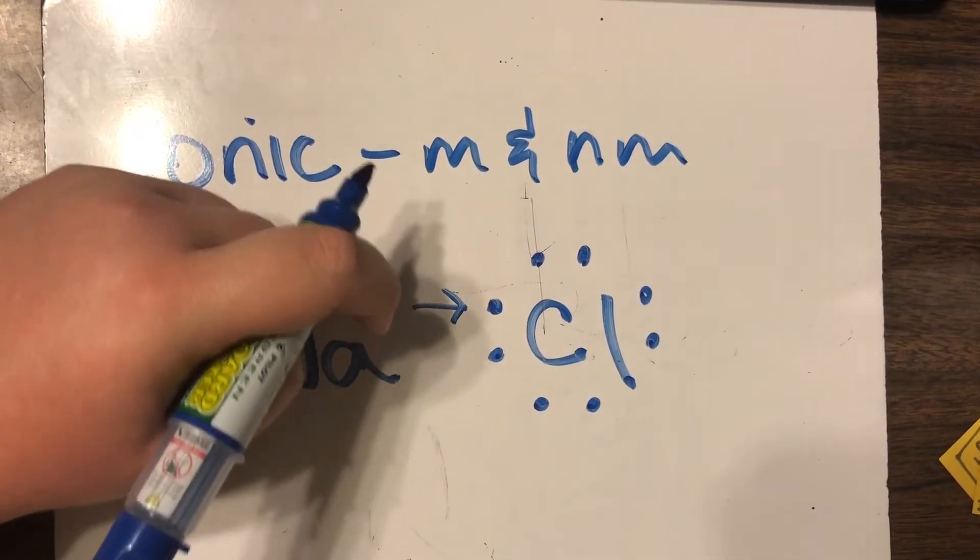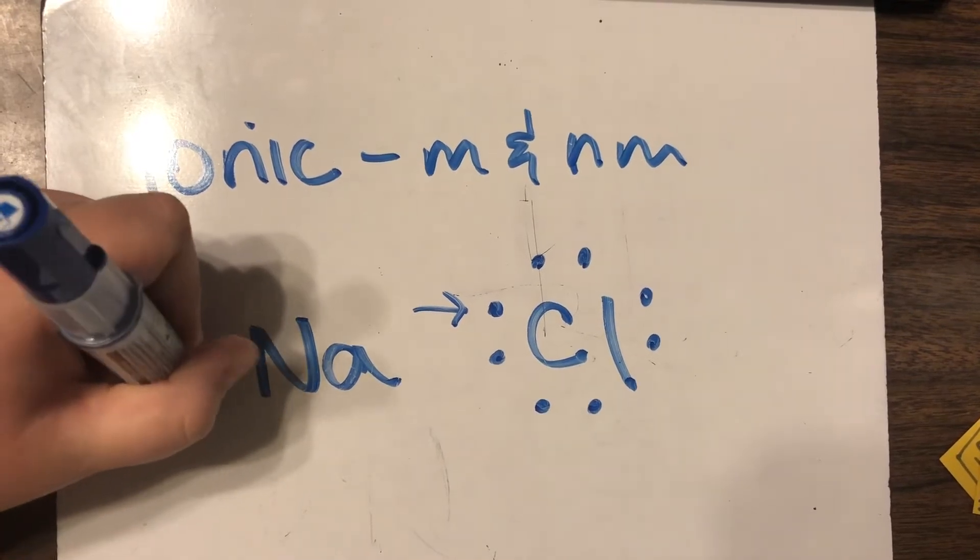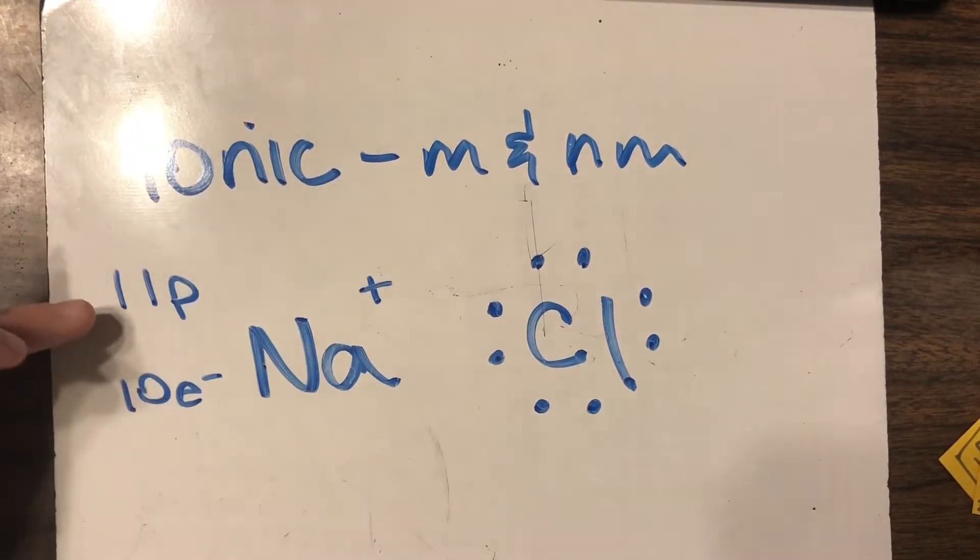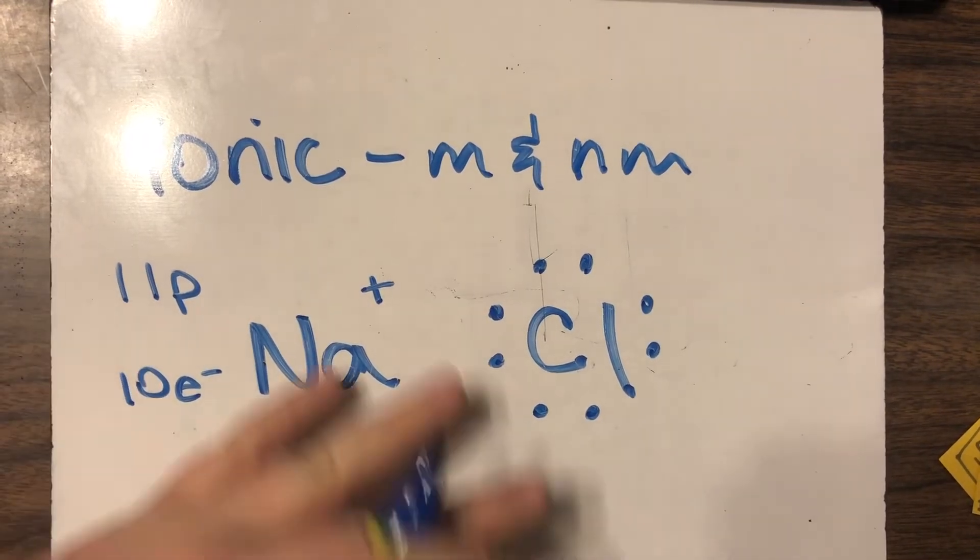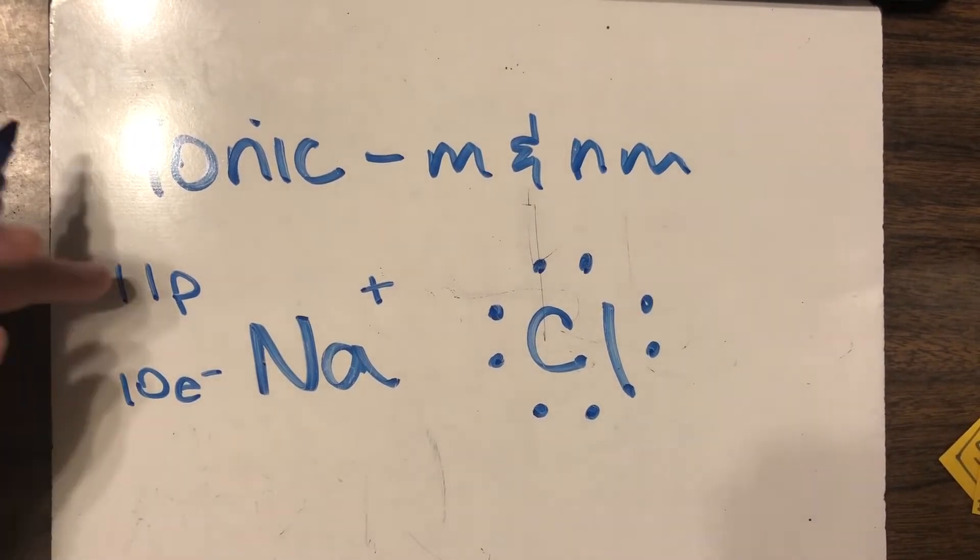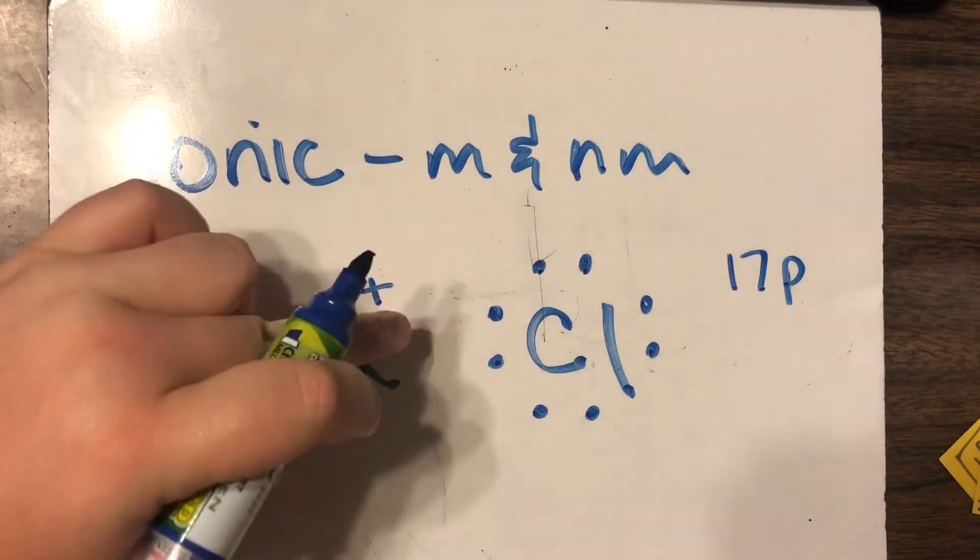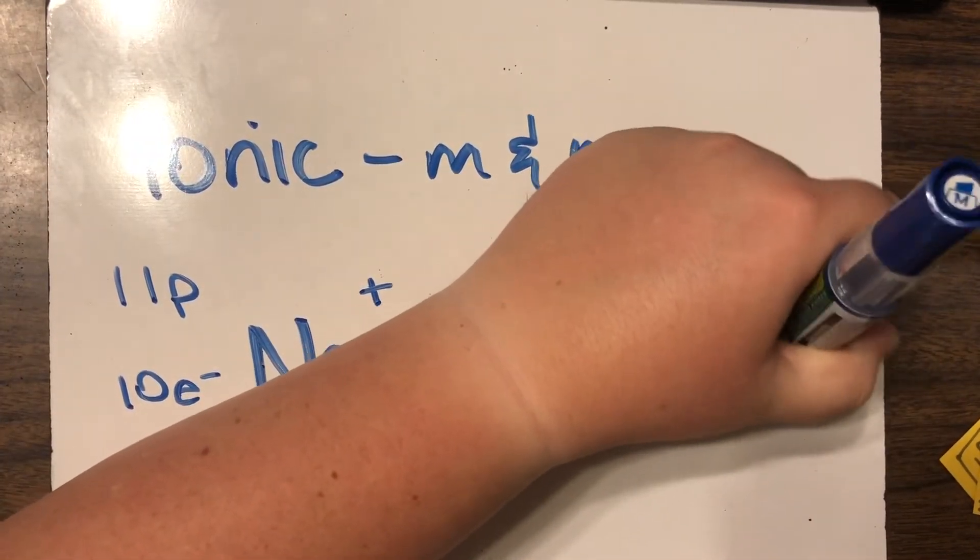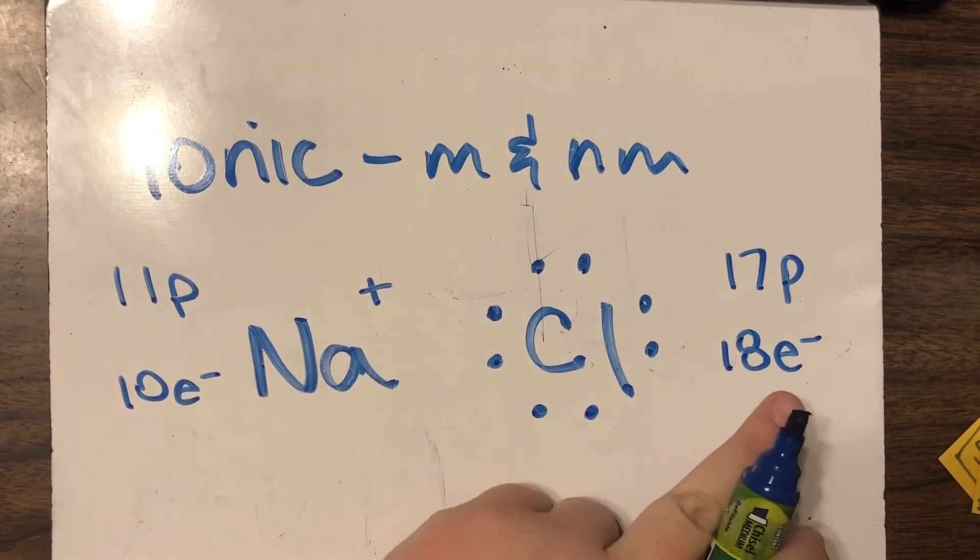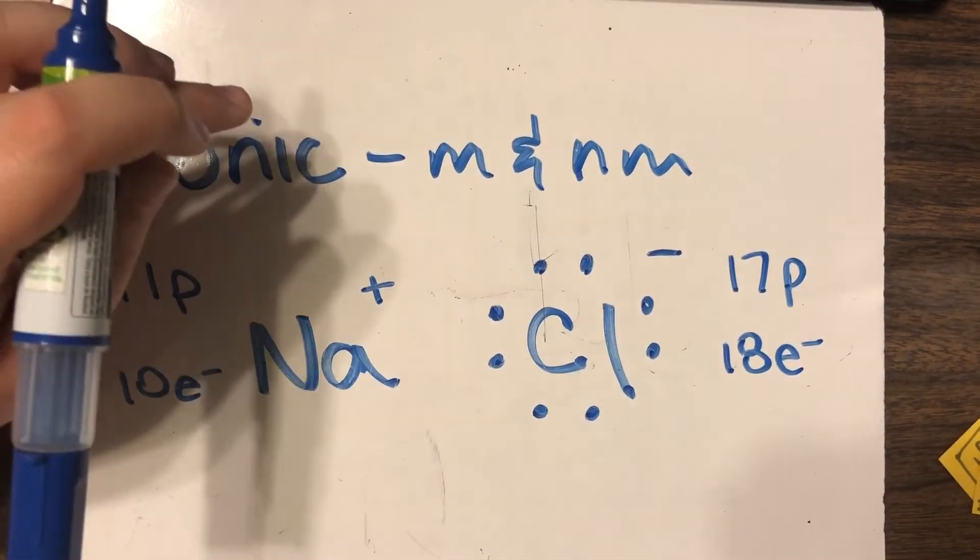So it'll transfer that electron over there and when that happens it now has an imbalance of protons and electrons. Sodium has 11 protons and 10 electrons. That means it's a positive one charge now because it's got one extra proton than it does electrons. That doesn't mean it gained a proton, that just means now if we were to line them all up and cancel each other out we would have one proton that doesn't have a partner. With chlorine a similar thing has occurred. It has 17 protons but now that it's taken an electron away from sodium it has 18 electrons.